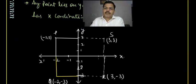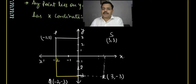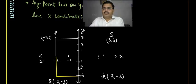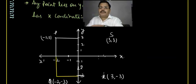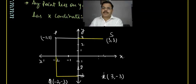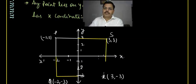So till now you have understood what is a quadrant, what is the x-axis, what is the y-axis, the quadrant system, and which is the first, second, third, and fourth quadrant with their coordinate values. We will discuss the rest in the next class and also discuss some questions related to this.